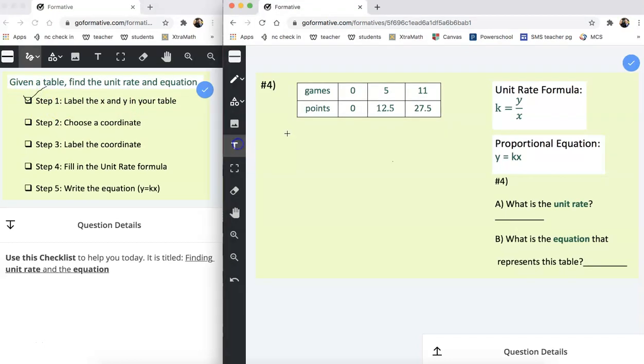So I come over to the problem and the top row represents the x values and the bottom row represents the y values. So that means that 0, 5, and 11 are all x values and 0, 12.5, and 27.5 are all y values.